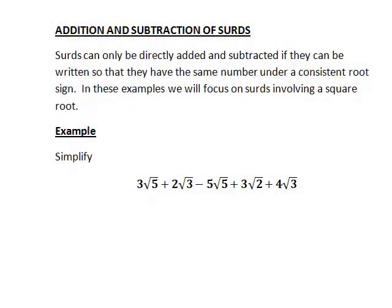In this recording we shall look at addition and subtraction of surds. If we want to leave surds in exact surd form as opposed to rounding them off to a specified number of decimal places, then we can only directly add and subtract surds if they can be written so they have the same number under a consistent root sign. In these examples we will focus on surds involving a square root.